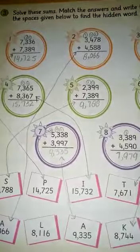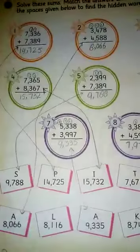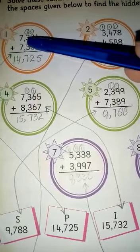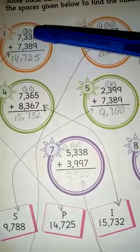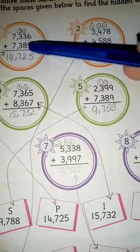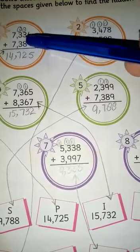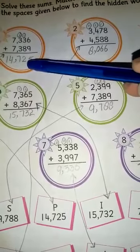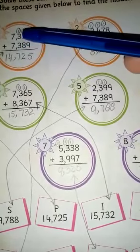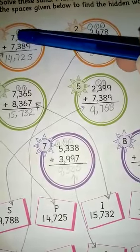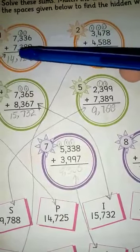Now let's see the first question solved. We have 7,336 plus 7,389. 6 ones plus 9 ones is equal to 15 ones. Write 5 here in the ones place. 1 plus 3 tens plus 8 tens equals 12 tens. Put 2 here in the tens place.